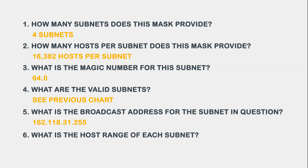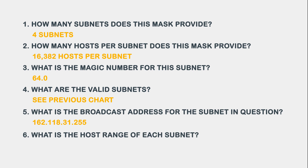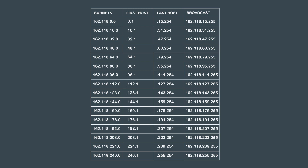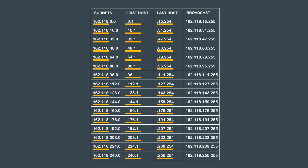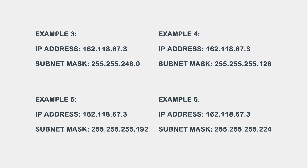Here is a quick review of the answers for this question. Question 6 asks: What is the host range of each subnet? If we look at our chart again, we can easily see the answer. Our host ranges are for the first subnet. Now try some practice on your own. Please write down and work out all six questions for the following examples. Be sure to press pause and then play again when you are ready to check your work.